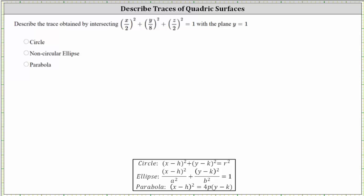We're asked to describe the trace obtained by intersecting the given quadratic surface with the plane y equals one. We'll analyze this graphically as well as algebraically. Let's first take a look at this graphically.